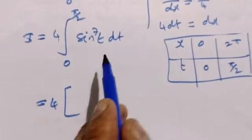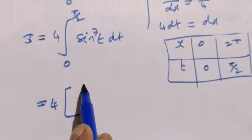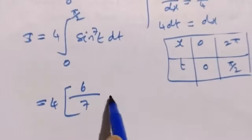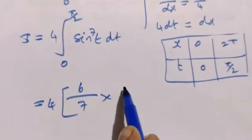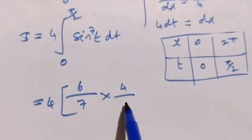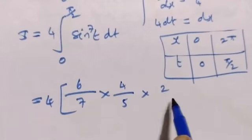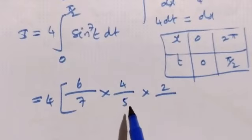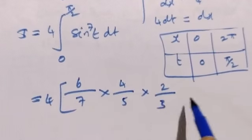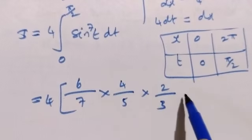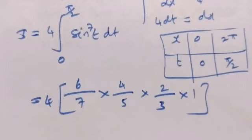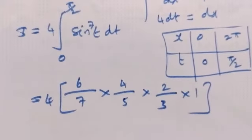So when applying the reduction formula, we have power 7, odd number. 7 minus 1 is 6, 7 minus 2 is 5, 5 minus 2 is 3, 3 minus 2 is 1.